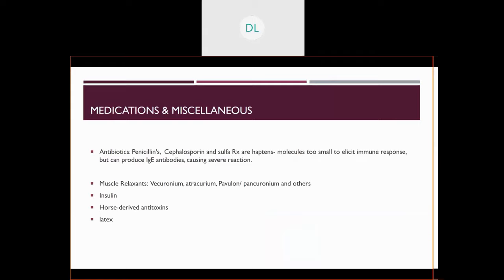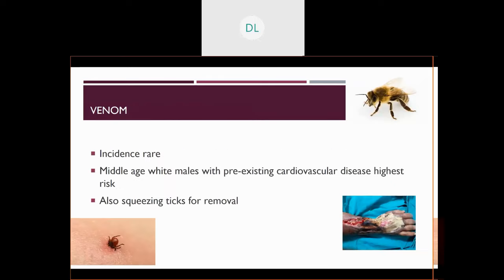Medications and other substances such as antibiotics, muscle relaxers, insulin, horse-derived antitoxins, as well as latex, can all cause anaphylaxis. When it comes to venom, middle-aged males with pre-existing cardiovascular disease are at highest risk. When you remove a tick, if it's squeezed, you are injecting more of the venom, increasing the chance of anaphylaxis. On the right here, you will see a necrotic skin lesion — he had compartmental syndrome after a snake bite and had to have a fasciotomy.